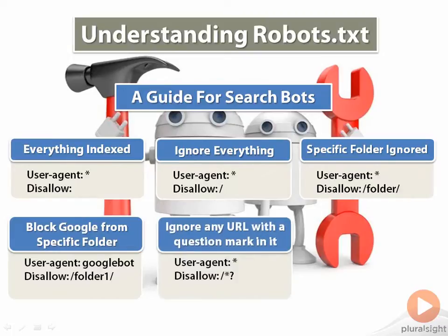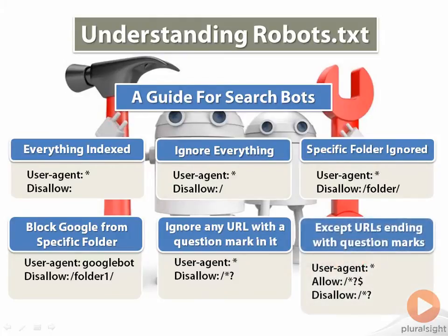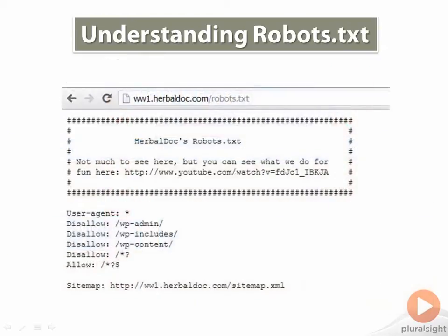This example is one I use in HerbalDoc. For the site, I use the query string part of the URLs solely for session IDs, and so I use the command of forward slash asterisk question mark to exclude all URLs that contain dynamic parameters, to ensure that search bots are not crawling duplicate pages. However, I also want the search bots to crawl all URLs that end with a question mark. Here's how HerbalDoc's robots.txt file looks. You can see that in addition to the last example, I am also blocking several WordPress folders.